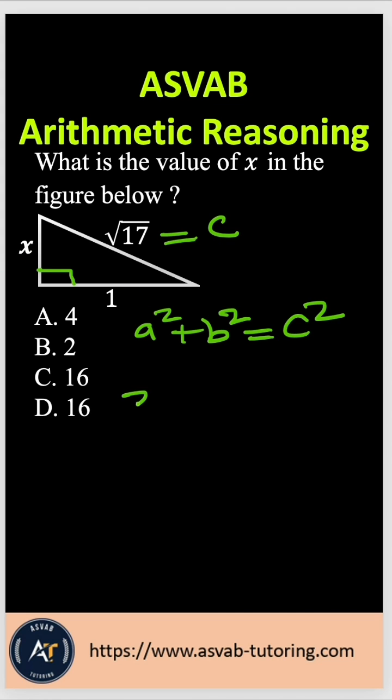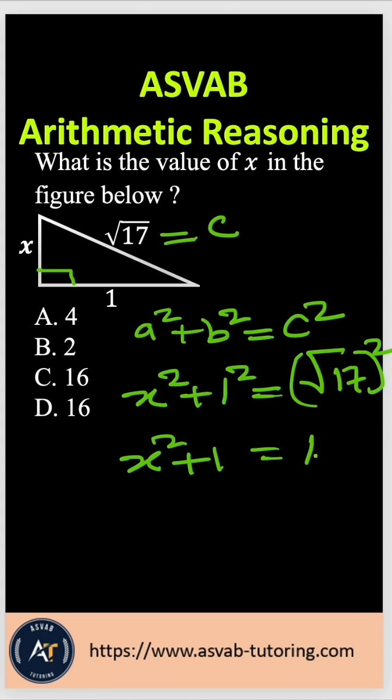So let me write that down. That gives you x² + 1² = (√17)². Now, x² + 1 = 17. Now subtract both sides by 1.